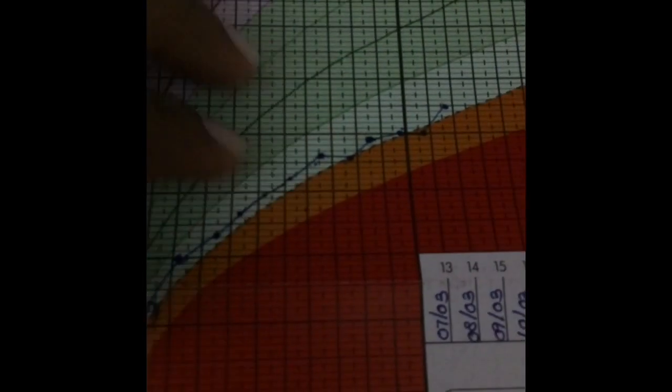When this pattern has crossed two centiles, you can see here, you can say there is a failure to thrive. Also, you can see growth flattening here, this sort of growth flattening.